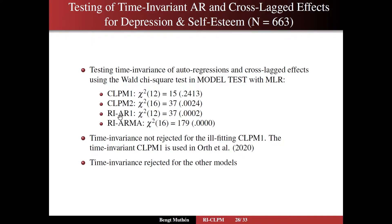It doesn't matter that the invariance test can't reject invariance. If we look at the other models that include the random intercept, we see a clear rejection of invariance across time. So here it's clear that we should work with the model that has varying autoregressions and cross-lags. We clearly reject invariance across time, and also for RI-ARMA.